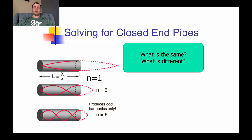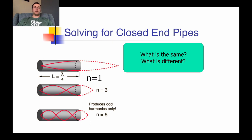For closed pipes, things change a little bit. Note the fundamental frequency in the top left: it only produces a quarter wave. Then our third harmonic produces three quarters of a wave, and our fifth harmonic produces one and a quarter waves. There are no even harmonics being produced here. We have a closed end — fixed, just like a string — so we have a node at that fixed end. As sound leaves the open end, it's going to be an antinode. The smallest possible frequency is resultant from a quarter wave equal to the length of that pipe — that is our true fundamental.